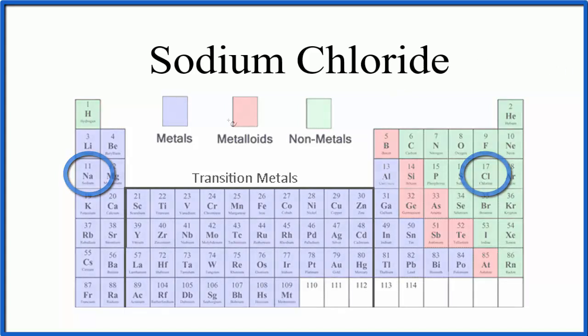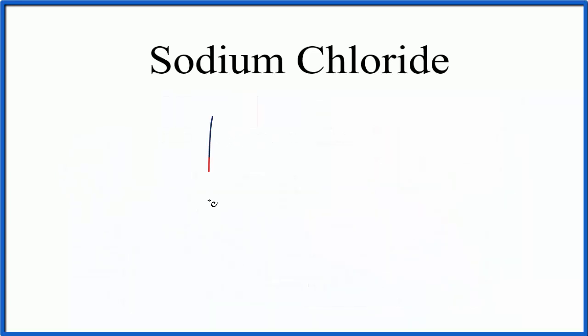First we write the symbols for each element, so on the periodic table sodium is Na, and then we have our chloride, which is chlorine, on the periodic table, that's Cl.